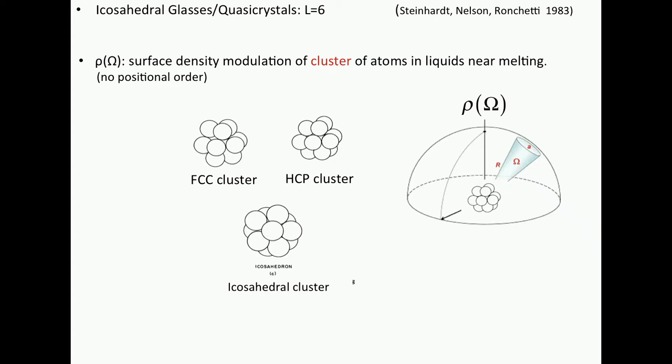Maybe these clusters can kind of line up without positional ordering. They may have the same direction without positional ordering, and then I can do the same Fourier decomposition on the surface of a sphere, and I can say, well, should it be FCC, HCP, or icosahedral? And the question is, what is the best choice?